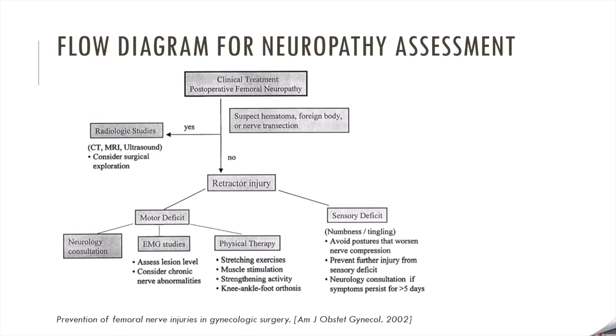Here is a simple diagram for the assessment of postoperative femoral neuropathy. If you suspect a hematoma, foreign body, or nerve transection, you're going to want to do radiographic studies. Otherwise, consider retractor-related injury like the Bookwalter. The femoral nerve has two distributions — motor and sensory. With sensory issues, if there is prolonged failed return to function or symptoms lasting greater than five days, get a neurology consult. Motor deficits should be assessed appropriately as listed on the slide.